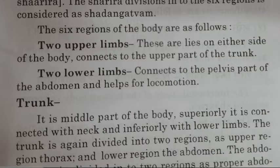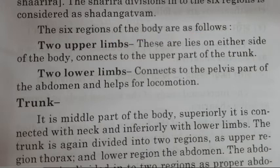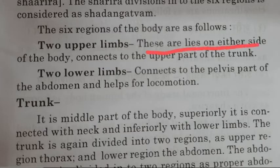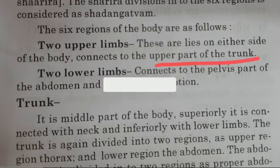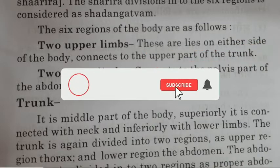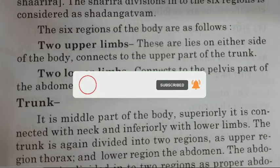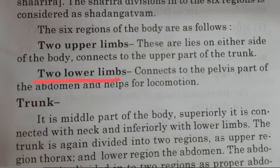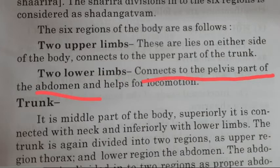The six regions of the body are as follows. First, the two upper limbs, which lie on either side of the body and connect to the upper part of the trunk. Next are the two lower limbs, which connect to the pelvis part of the abdomen and help for locomotion.